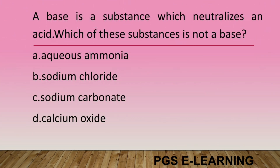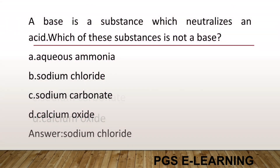A base is a substance which neutralizes an acid. Which of these substances is not a base? Option A, aqueous ammonia. Option B, sodium chloride. Option C, sodium carbonate. Option D, calcium oxide. Correct answer is sodium chloride.